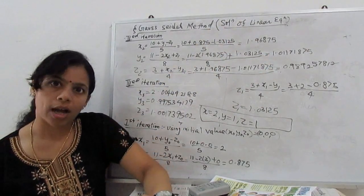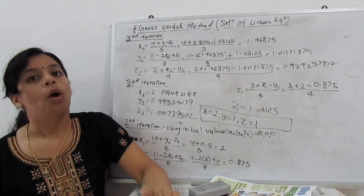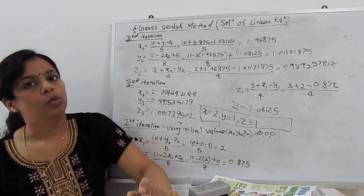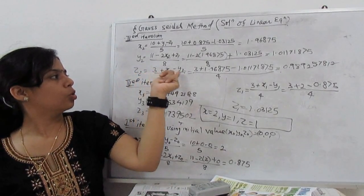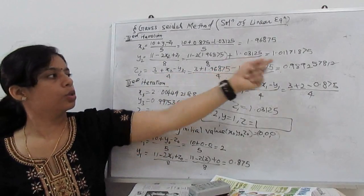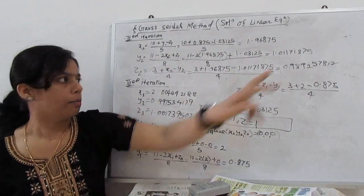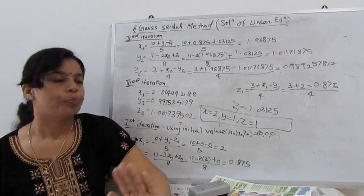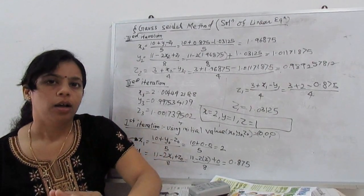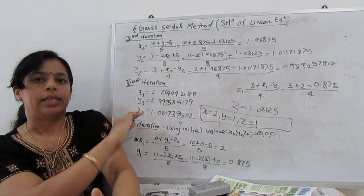Now X2 and Y2 both are there. For Z2, we use X2 and Y2 to calculate Z2. Substitute here (3 + X2 - Y2)/4. My new Z2 coming here: 0.989257812. With the same manner, follow in iteration 3.